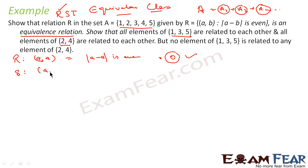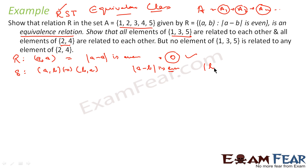For symmetry, if A comma B is a member, this should imply B comma A is a member. So if A comma B is a member, that means A minus B mod is even. Now A minus B mod and B minus A mod are the same, because we have taken mod — it is all positive. So if A minus B mod is even, B minus A mod is also even. That means B comma A is a member of this set. So this is symmetric also.